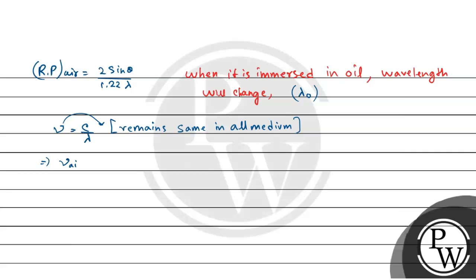So we can say that frequency in the air is equal to frequency in the oil. So, this equals c, that is velocity of light in air by lambda in air equals velocity of light in oil by lambda oil.